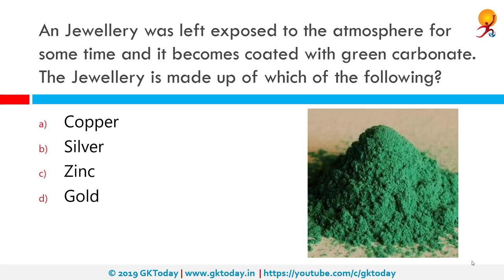Jewelry was left exposed to the atmosphere for some time and became coated with a green carbonate. The jewelry is made up of which of the following? The correct answer is copper. The green substance is copper carbonate. Verdigris is the common name for the green pigment obtained through the application of acetic acid to copper plates, or the natural patina formed when copper, brass or bronze is weathered and exposed to air or sea water over time.